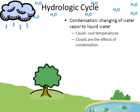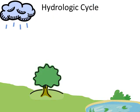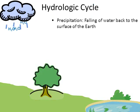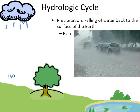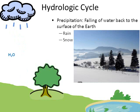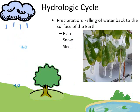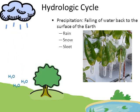The same thing happens when water vapor rises into the air — it cools and condenses and forms clouds. Clouds are the result of condensation. Once clouds are formed, that leads to precipitation, the falling of water back to the surface of the earth. Precipitation can be rain, snow, or sleet — which forms when it's not cold enough for snow and not warm enough for rain, creating that slushy mixture.